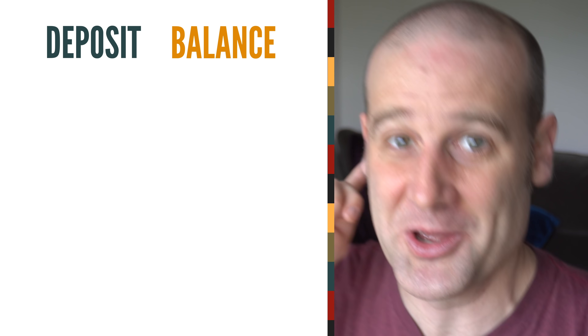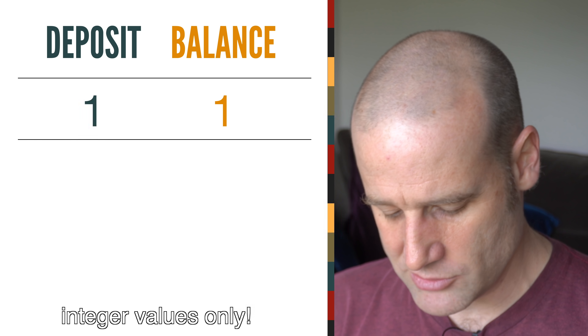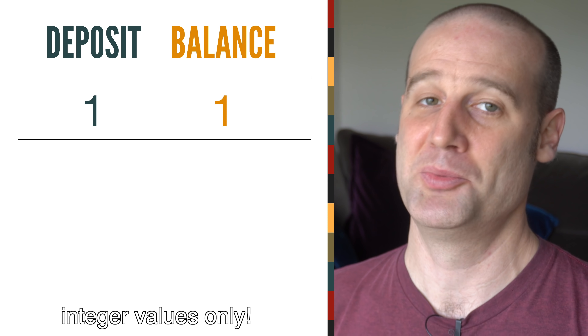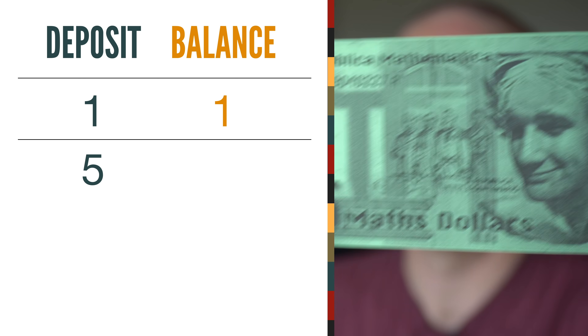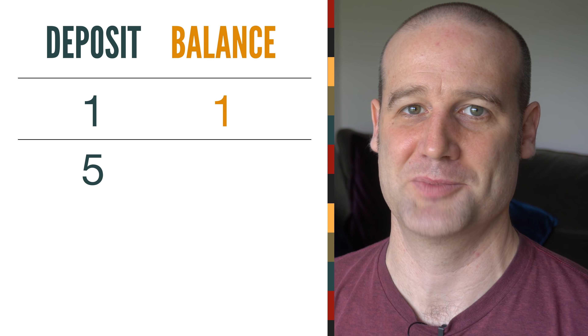You put in a deposit of one on the first day, which means your balance is now one. On the second day you go in and you put in, just hypothetically, let's say five — five math dollars. That's the only other denomination of math dollars I could find around the house.